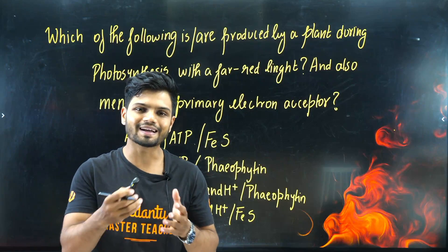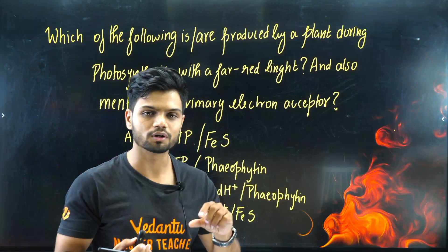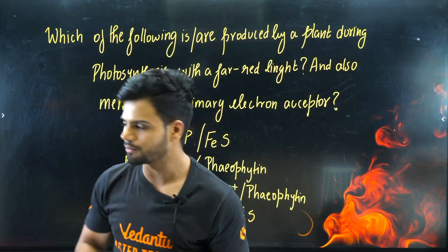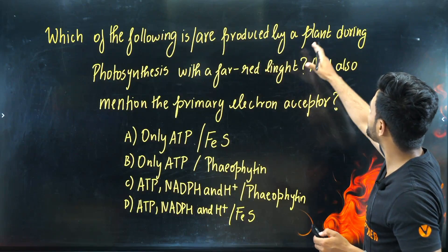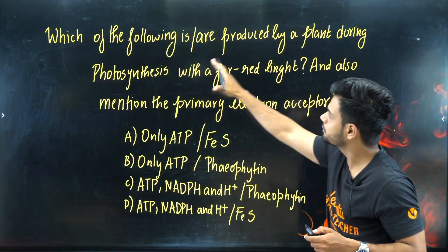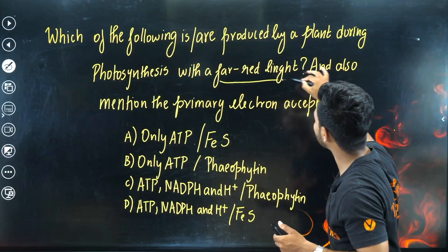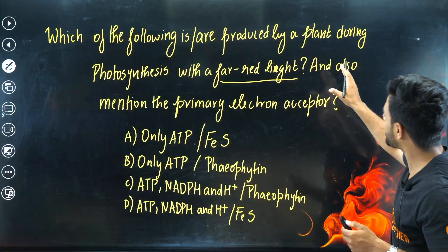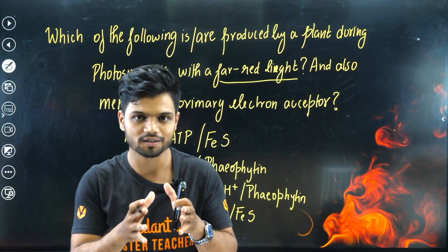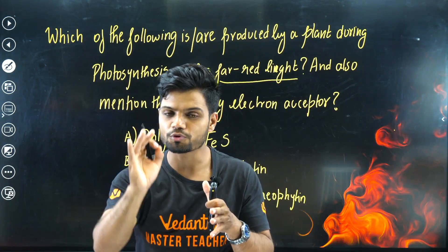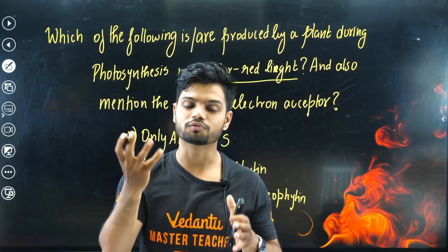This is a question from your photosynthesis in higher plants chapter — specifically from the light reaction subtopic — and it requires you to know multiple concepts. The question asks: which of the following are products produced by a plant during photosynthesis when far-red light is applied? You also need to identify the primary electron acceptor for that wavelength of light.